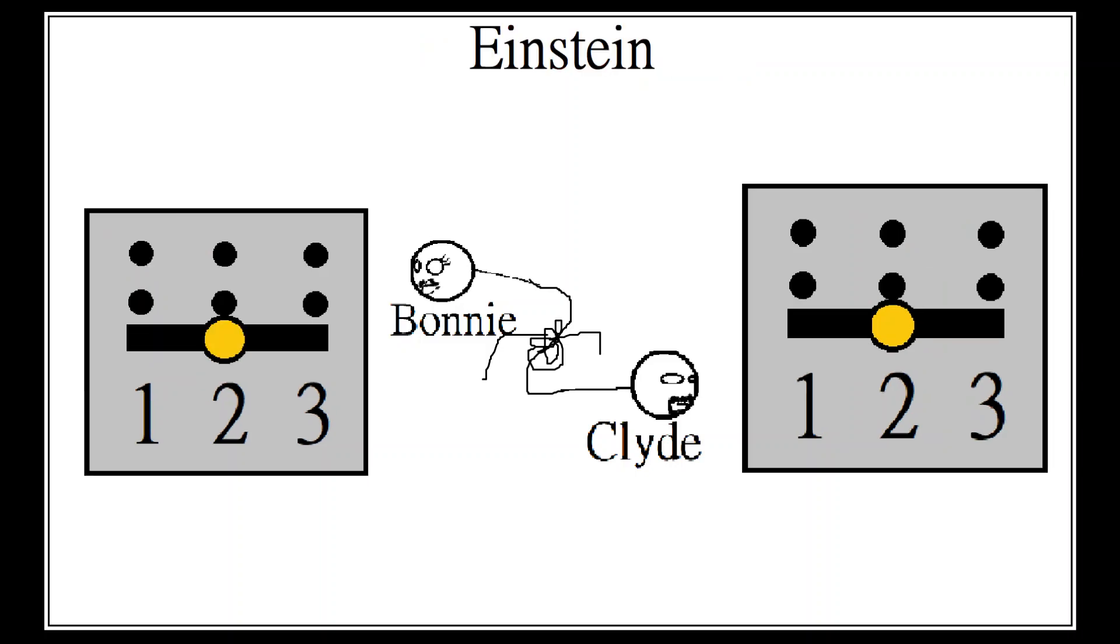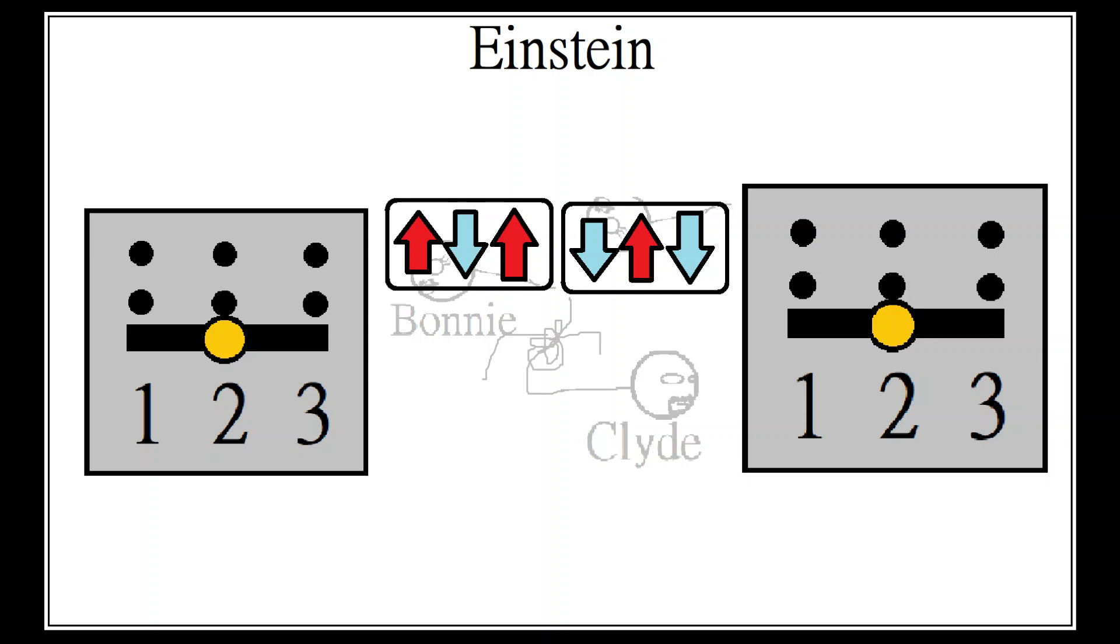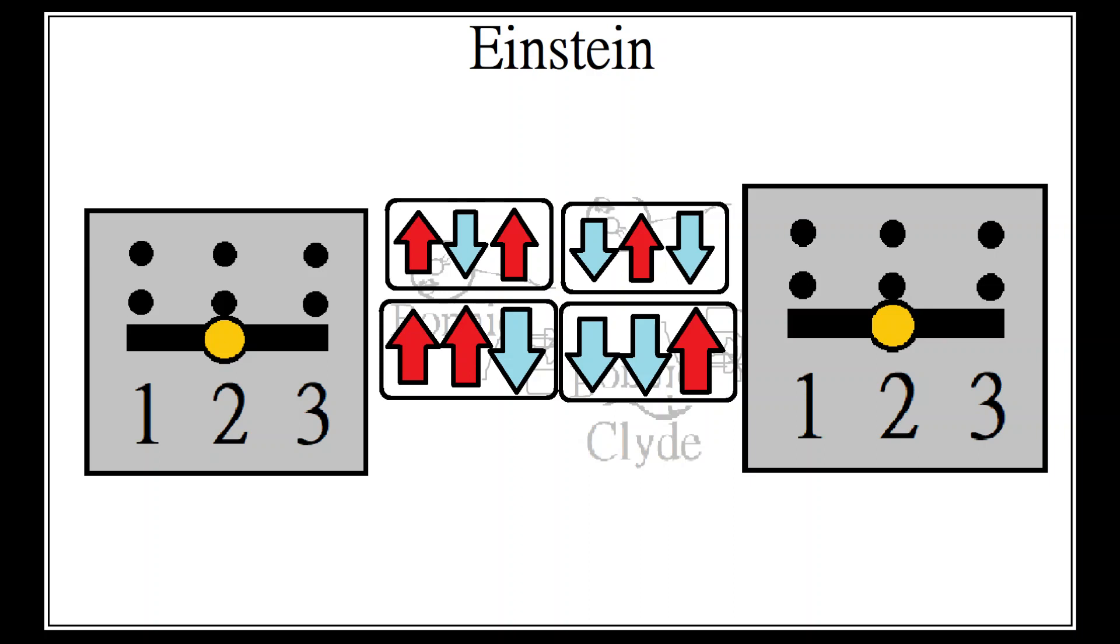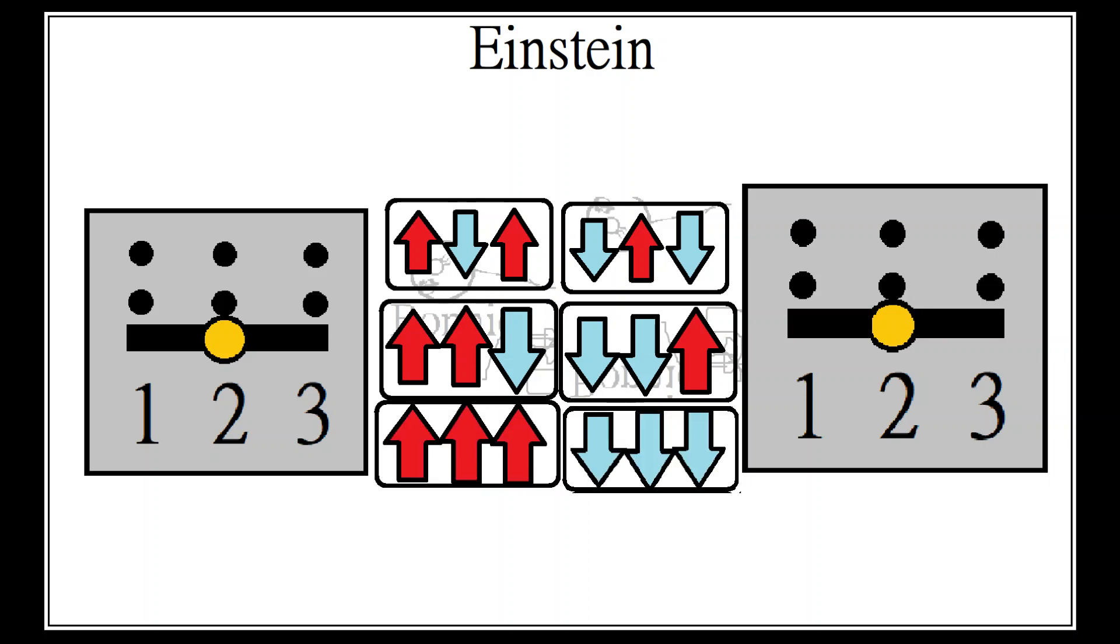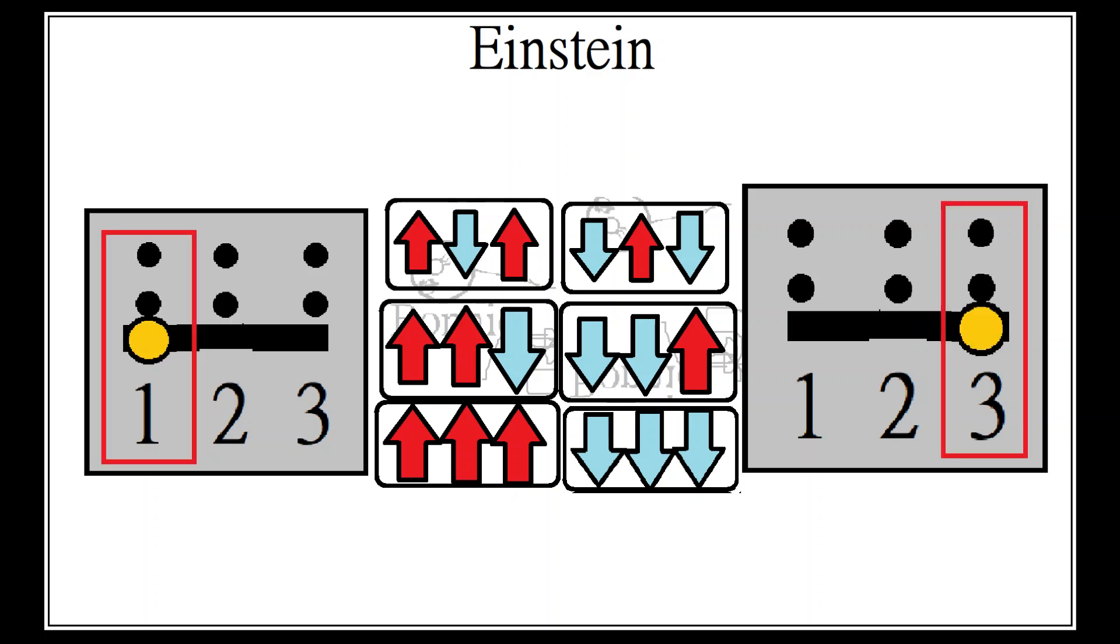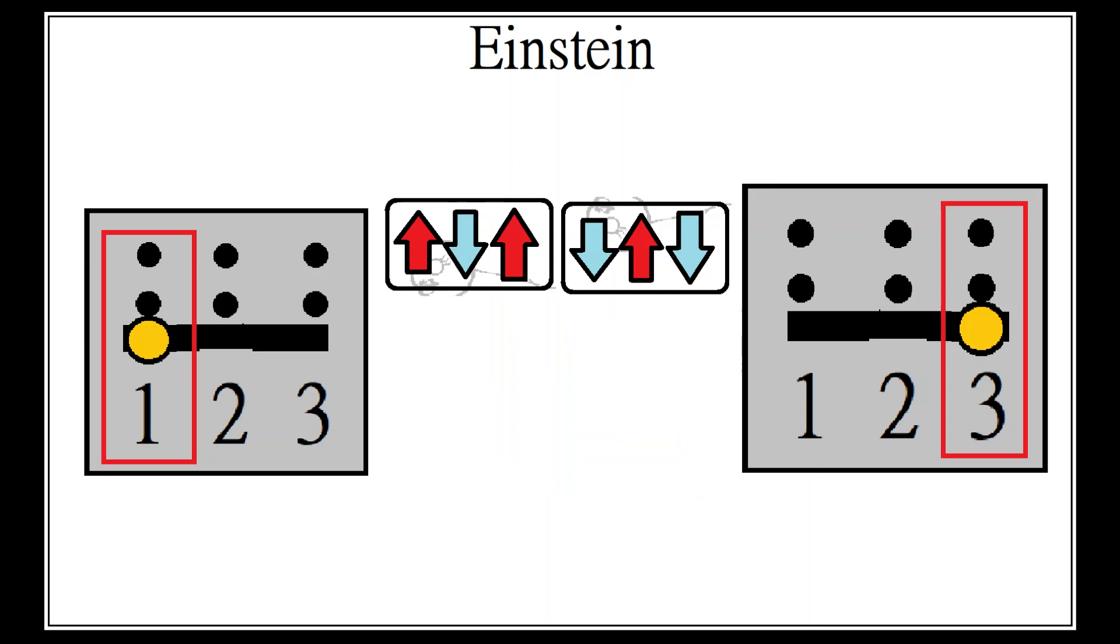Bell points out that if Einstein is correct, every particle must be predetermined along all three axes before being measured. And since the particles are entangled and must maintain conservation of energy, they can only come in one of three combination pairs: up-down-up with down-up-down, up-up-down with down-down-up, and all-up with all-down. For each of these combination pairs, there are nine possible measurement outcomes depending on which axis is chosen by which team in a given measurement. For example, if team A measures axis 1 and team B measures axis 3 and the incoming particles are up-down-up on one side and down-up-down on the other side, then the results will be up-down or down-up depending on which side. The point being that they will be alternating.